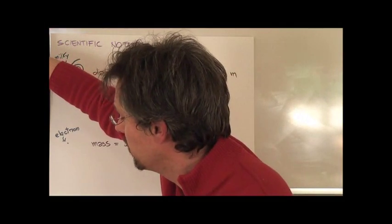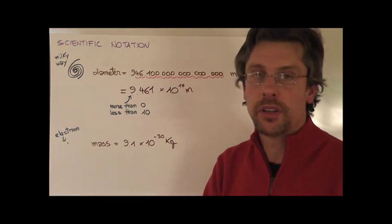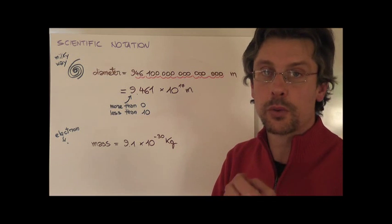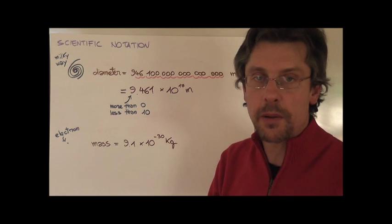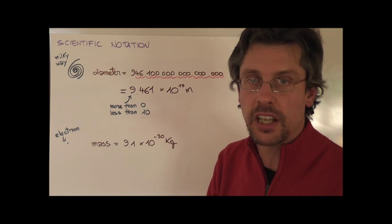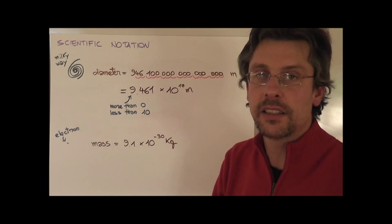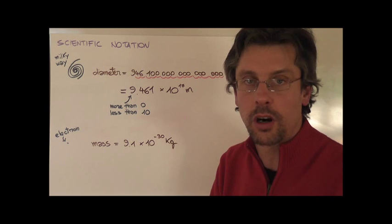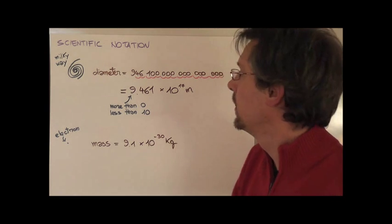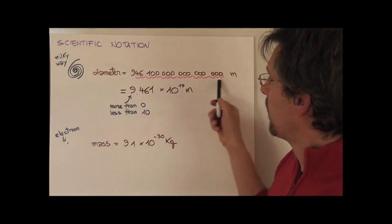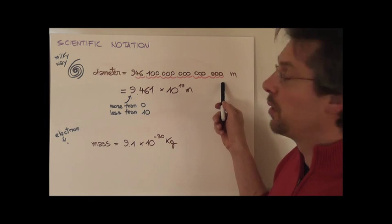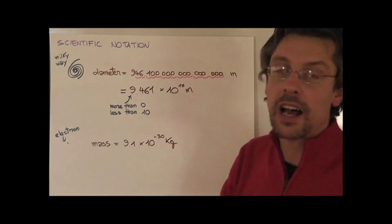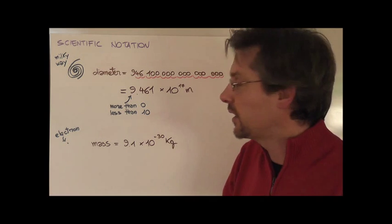So let's get back to the previous numbers. Let's see how we can rewrite the diameter of the Milky Way and the mass of the electron using scientific notation. Or, as we also like to call it, standard form. This is a number as previously written. And this is how we write it in scientific notation.